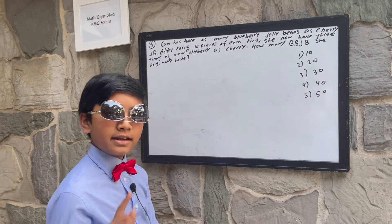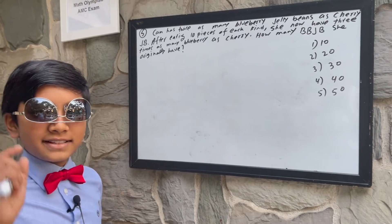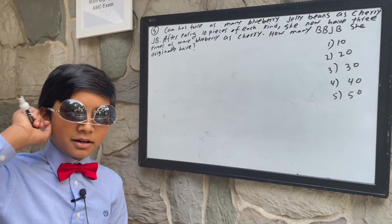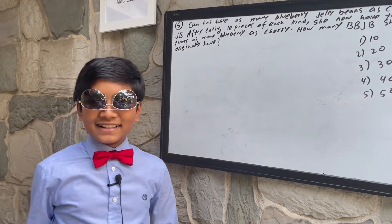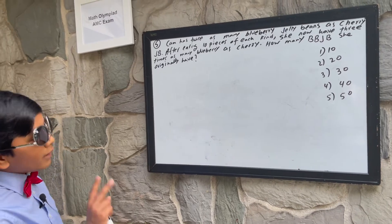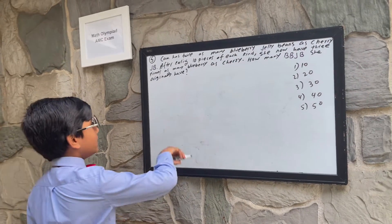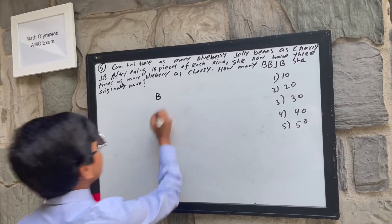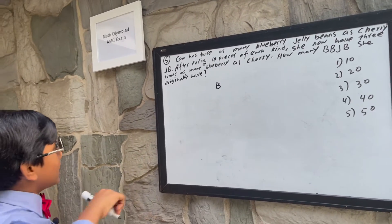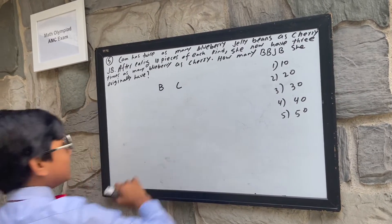We're going to be doing another AMC 10B 2017 problem. Cam has twice as many blueberry jelly beans, which I'll denote as B, as cherry jelly beans, C.